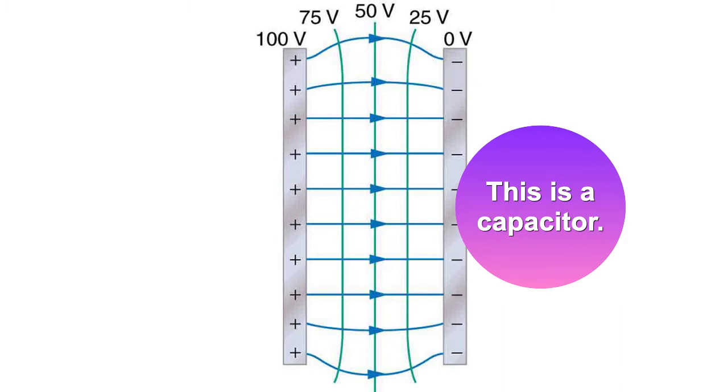Here's our parallel plate capacitor with some equi-potential surfaces marked in it: 100 volts on the high side, 0 volts on the low side, and three fairly equally spaced equi-potential lines, 75, 50, and 25 volts. In the middle where the field is uniform, it looks like a grid. The field lines are uniform density so the field is constant, and the equi-potential lines are therefore evenly spaced. The potential gradient is a constant.